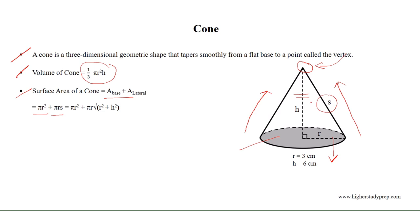The slant height s can be determined by applying the Pythagorean theorem, because the slant height of a cone is the hypotenuse of a right triangle with legs h and r, where h is the height of the cone and r is the radius of the base. This gives us the surface area of the cone equal to pi r squared plus pi r times the square root of r squared plus h squared.